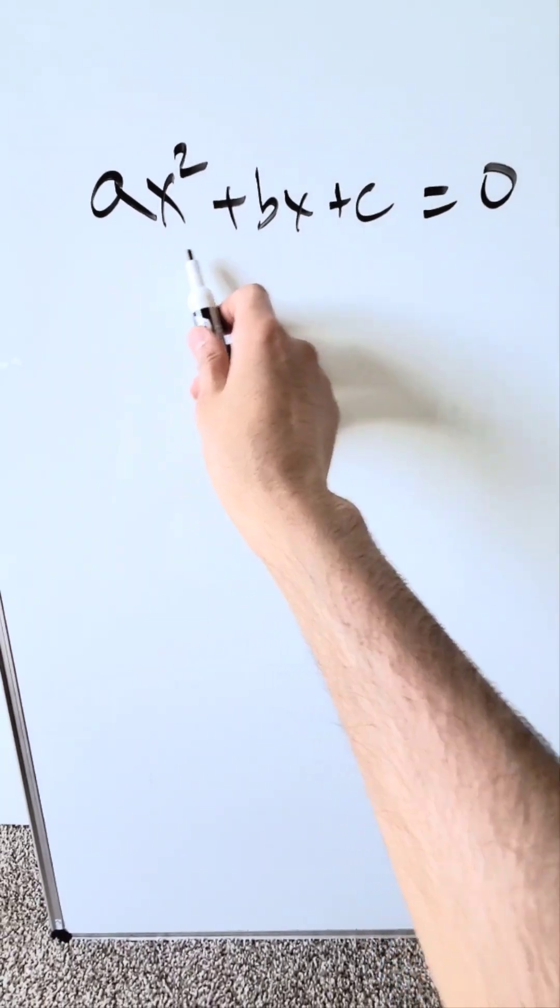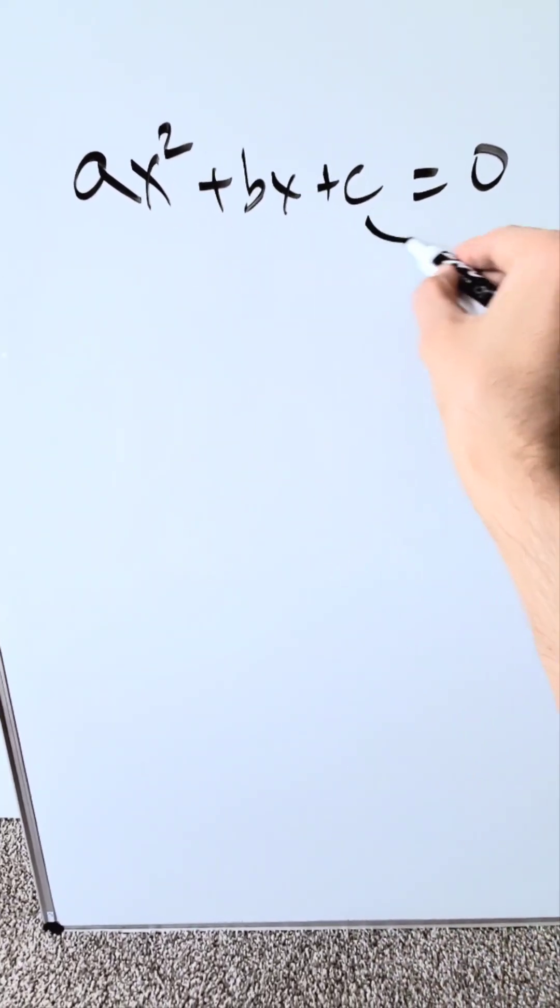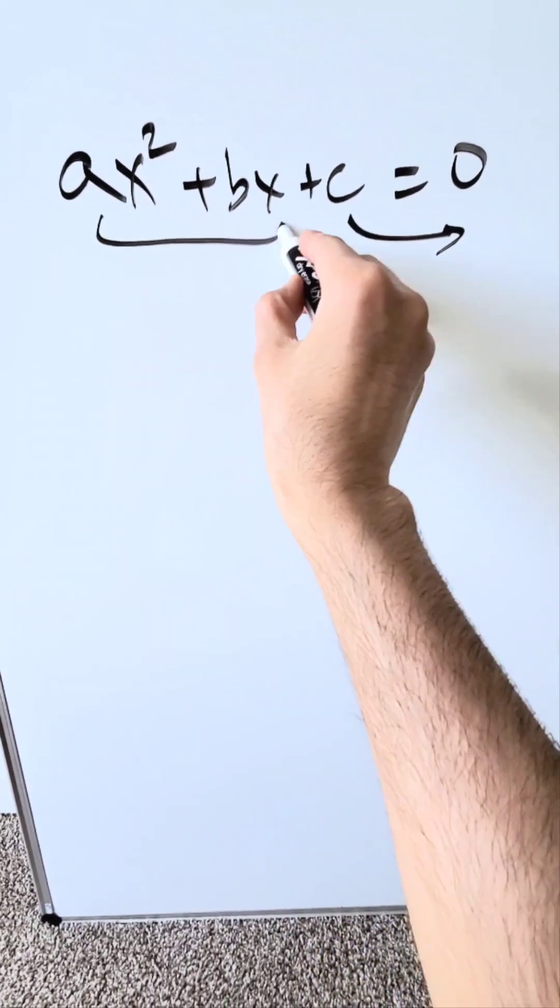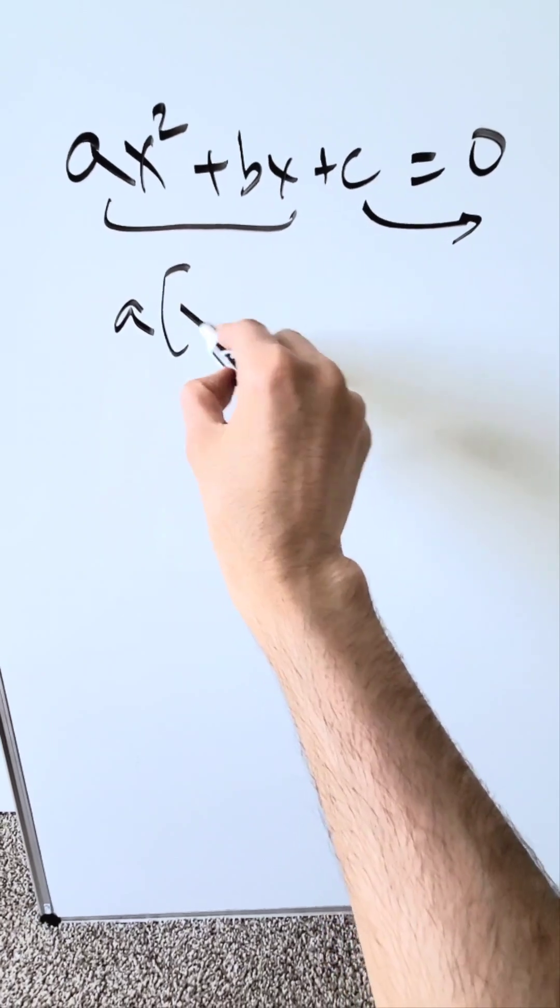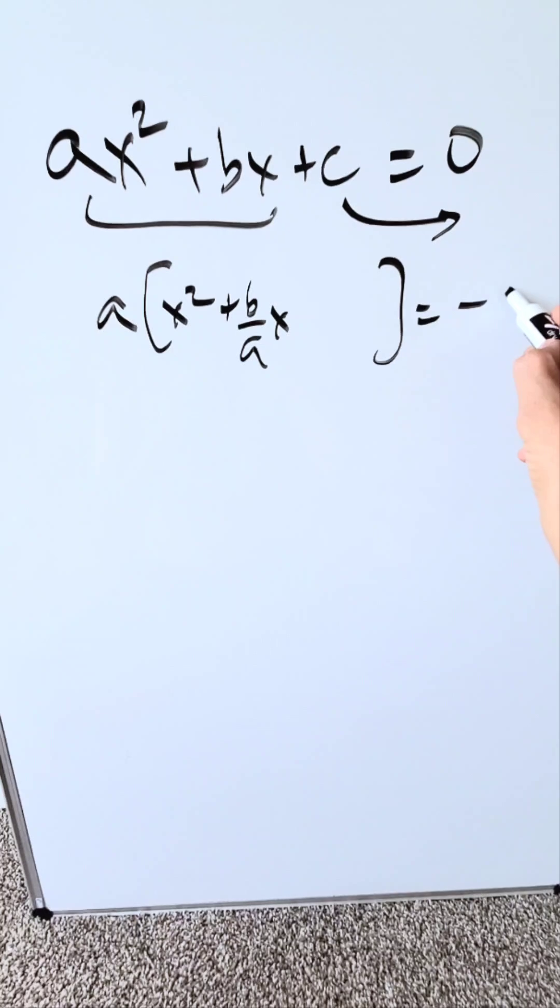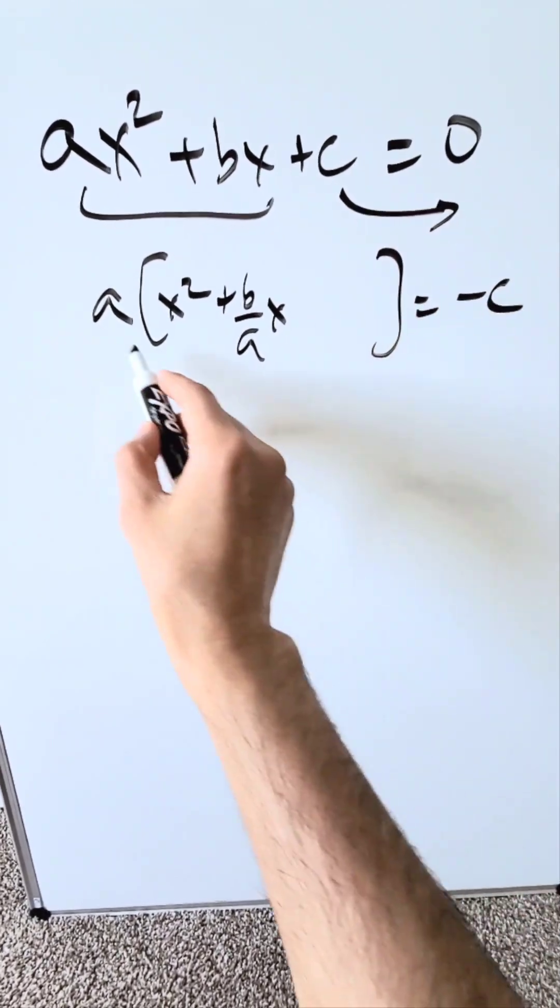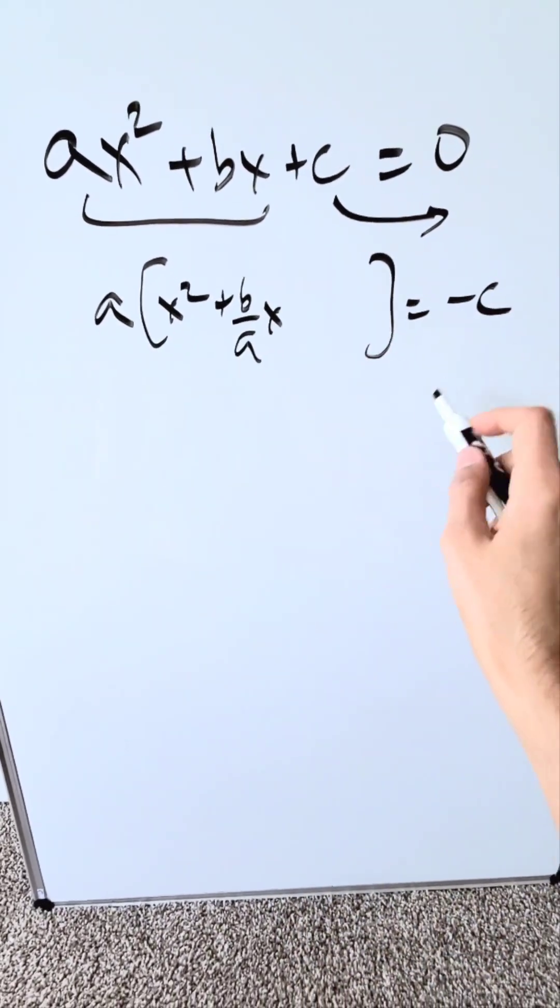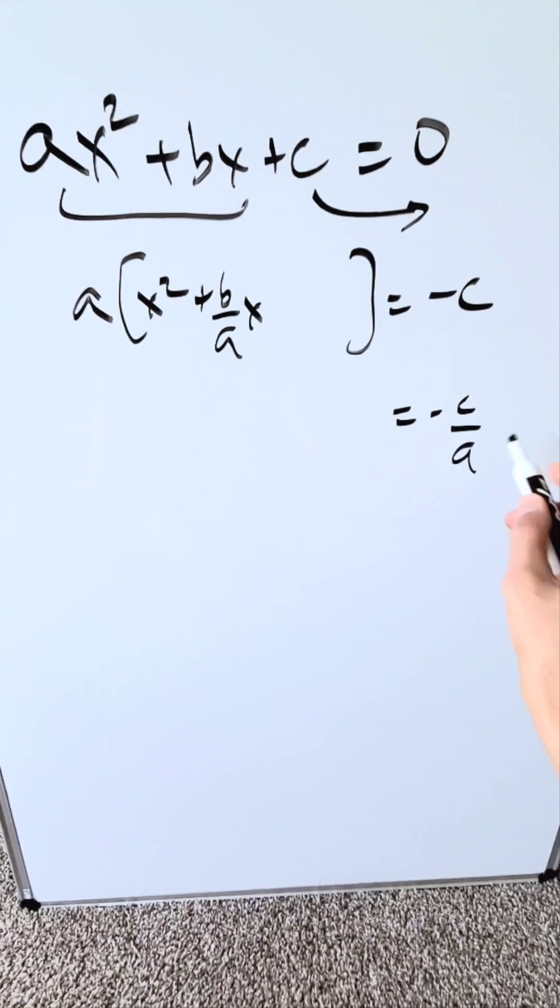You'll use completing by the square technique on this. You're going to push the c on the other side, and from here you'll isolate a. You have x squared plus b over ax. I have here a minus c because it went on the other side. Push the a on the other side and it'll divide by this. You'll have minus c over a.